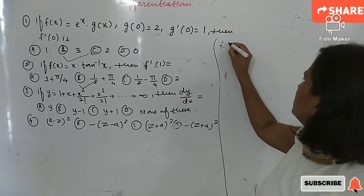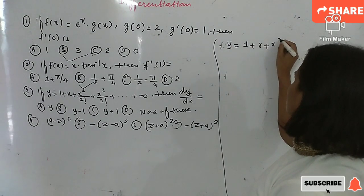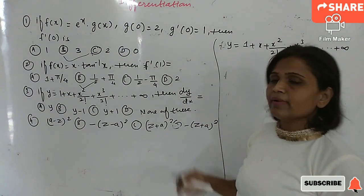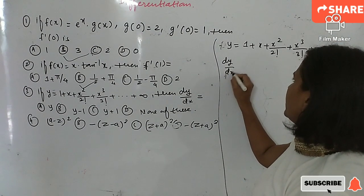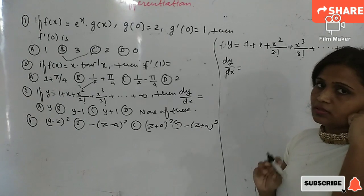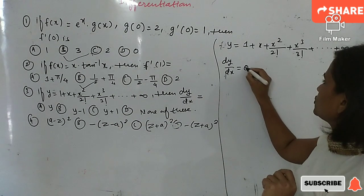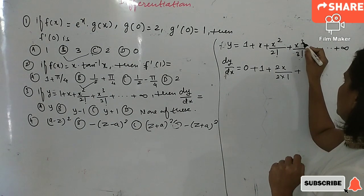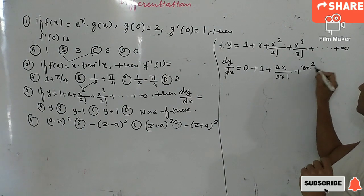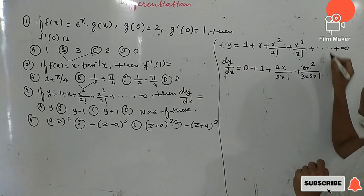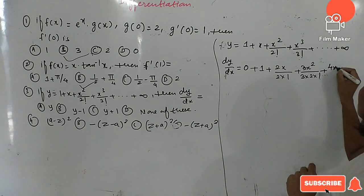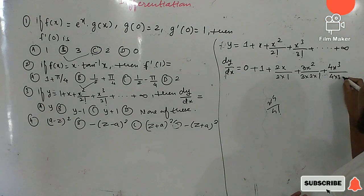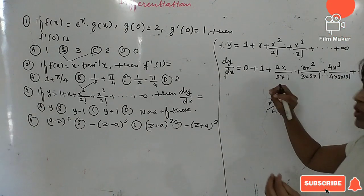Third question: y = 1 + x + x²/2! + x³/3! + ... up to infinity. Find dy/dx. Differentiating term by term: derivative of 1 is zero, derivative of x is 1, derivative of x²/2! is 2x/2! = x, derivative of x³/3! is 3x²/3! = x²/2!, and derivative of x⁴/4! is 4x³/4! = x³/3!, and so on up to infinity.